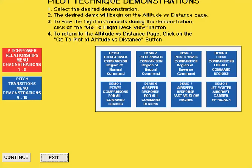The first eight demonstrations illustrate the aerodynamics of pitch and power control, which is strongly dependent on the command region. There are three command regions: normal, neutral, and reverse. When in the landing configuration, the wide-body jet transport utilized by the demonstration program is in the normal command region near 160 knots, the neutral command region near 130 knots, and the reverse command region near 100 knots.